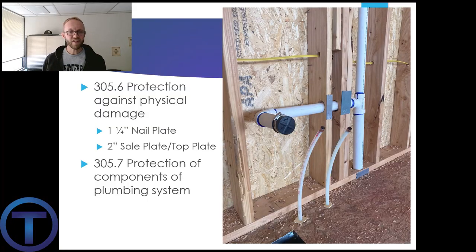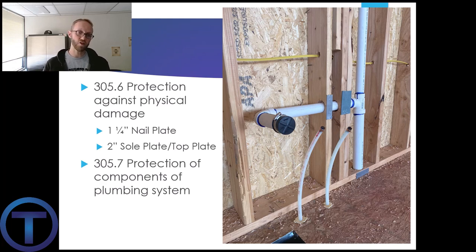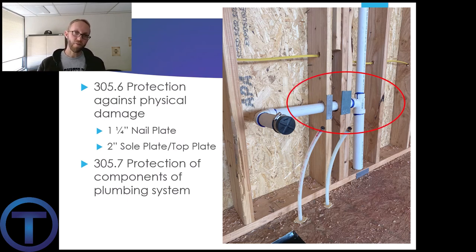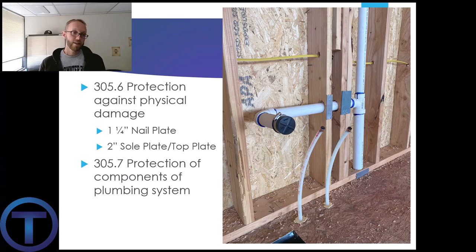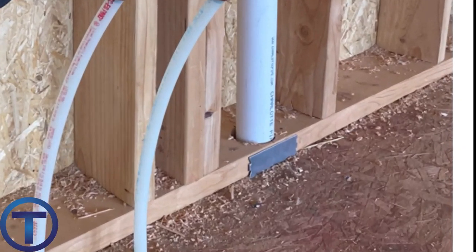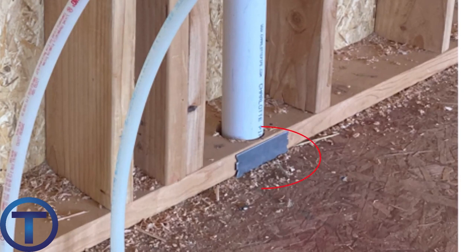305.6: Protection against physical damage. As they're hanging sheetrock on the wall, they're going to be driving screws into the studs, and those screws are long enough in many cases that they can penetrate right into our pipes. So we have to put on nail plates to protect the pipes from those screws. The requirement says that anytime the hole which the pipe passes through is one and a quarter inches or less from the face of that stud, we need protection. There should be a two-inch nail plate at the sole plate and the top plate — the sole plate at the bottom and the top plate running across the top of the wall.